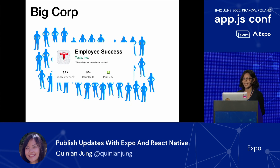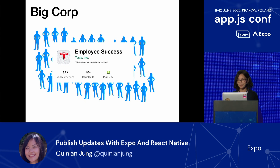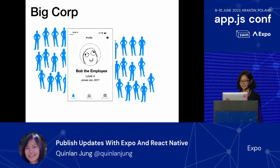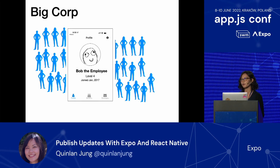So now I want you to imagine that you're the tech lead at a big corporation, and you're responsible for an app called the Employee Success app — the type of app that requires all employees to download to ensure their success. When you open up this app at the home screen, you'll typically see your employee avatar and your name. For example, Bob the Employee is level four and joined in January 2017. In the different tabs you can see employee benefits, and whenever Big Corp wants to push an announcement, you can see that in the Messages tab.